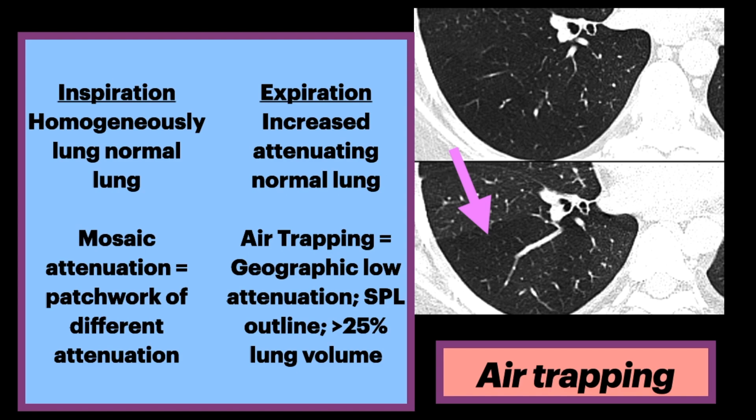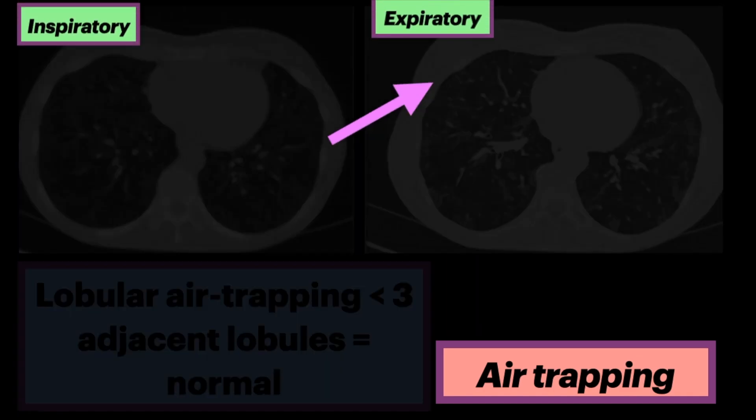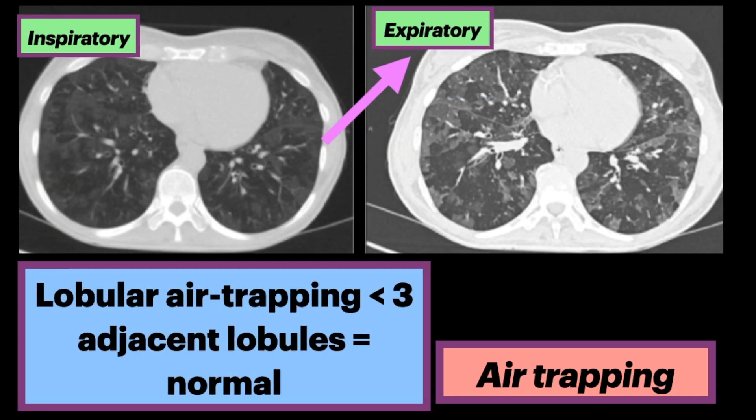On the right, we see a composite image of a patient with constrictive bronchiolitis — inspiration at the top and expiration at the bottom. The expiration image shows areas of air trapping that manifest as geographic areas of hyperlucent lung. It is not limited to lower lobe superior segments or lingular tip. Lobular air trapping less than three adjacent lobules is considered normal.